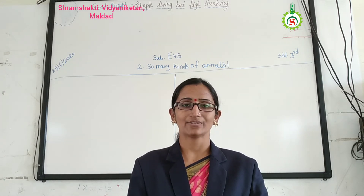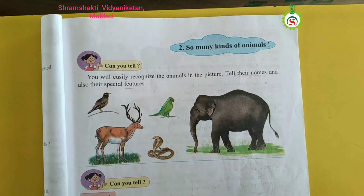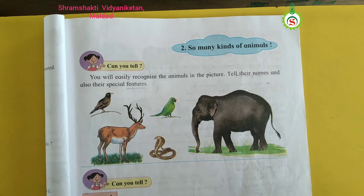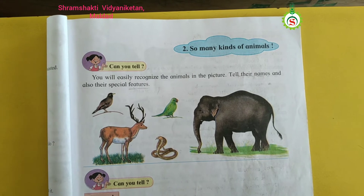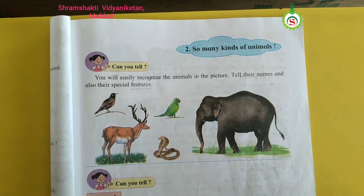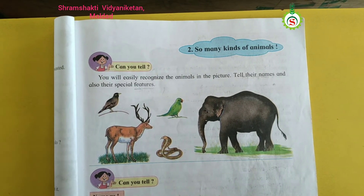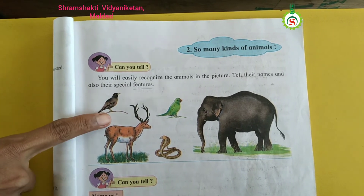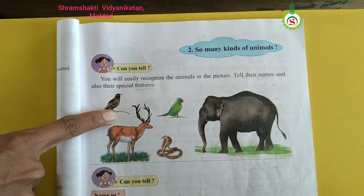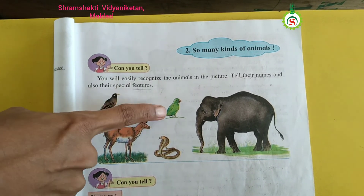Today I will show you one picture. Our topic name is 'Can you tell?' You will easily recognize the animals in the picture — tell their names and also their special features. Now look at this picture. Here are some animals' pictures. First is Maina. Maina is a brownish-black colored bird with a yellow beak.